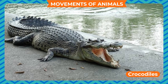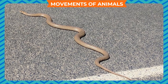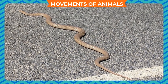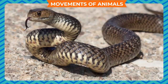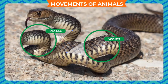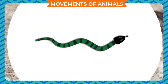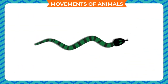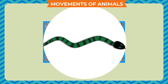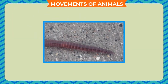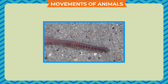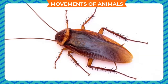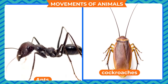Some reptiles such as lizards, tortoises, and crocodiles have legs, but their legs are very small so they can only crawl. Snakes are reptiles that have no legs. A snake has scales or plates on the underside of its body that help it to move. Earthworms move by contracting and extending their bodies.